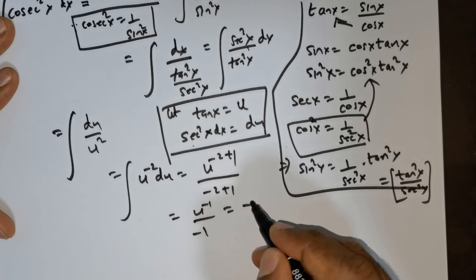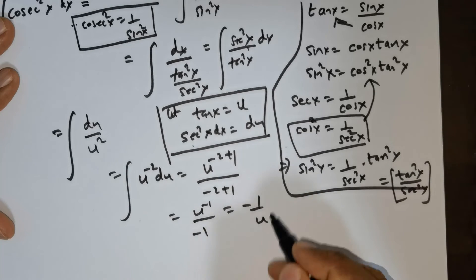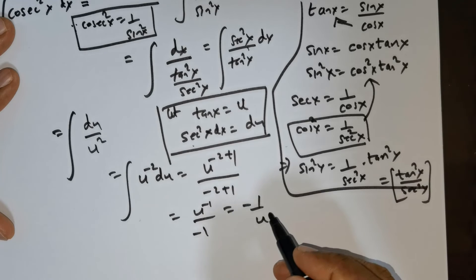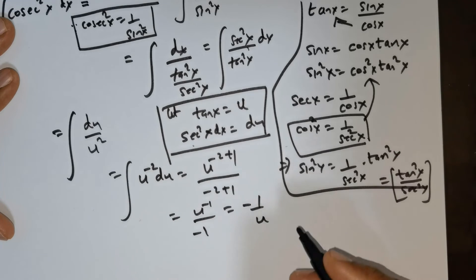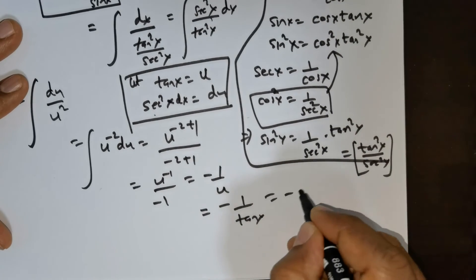Take the negative sign out and bring u to the denominator; you get negative 1 over u. But what is u? My u is equal to tan x, so substitute tan x.